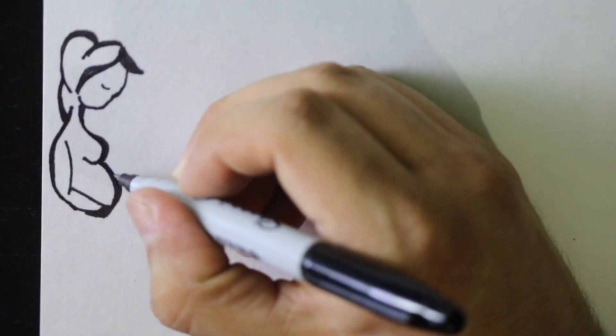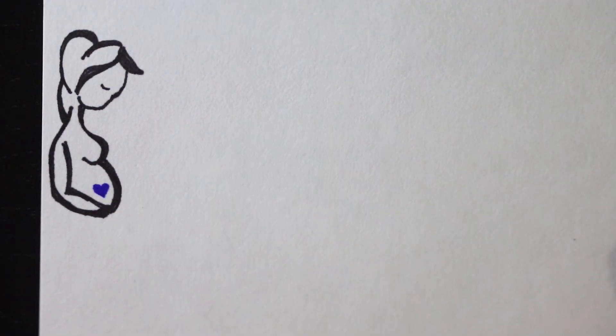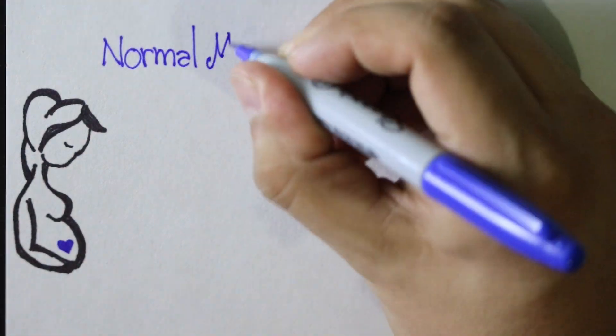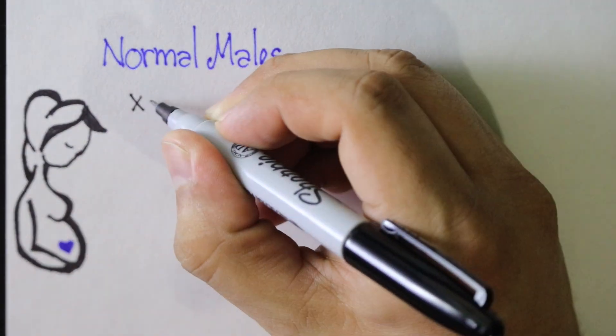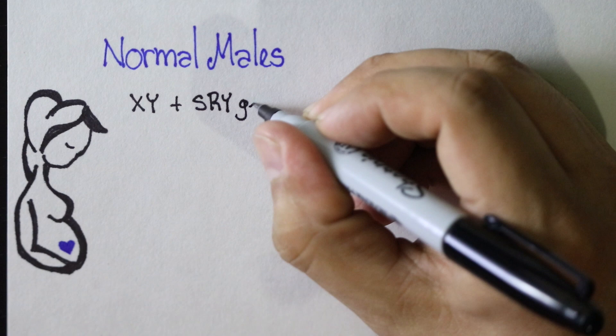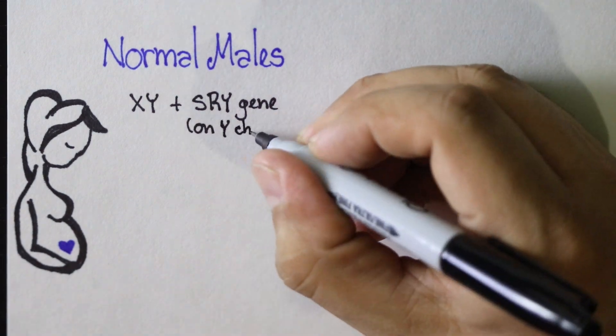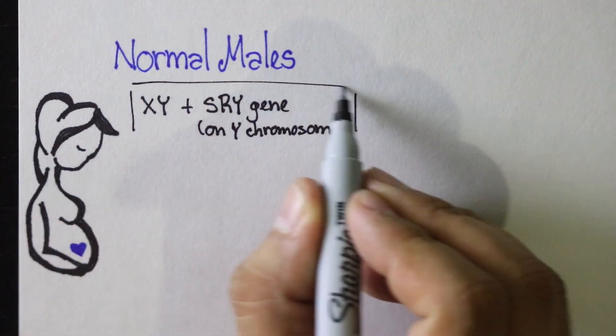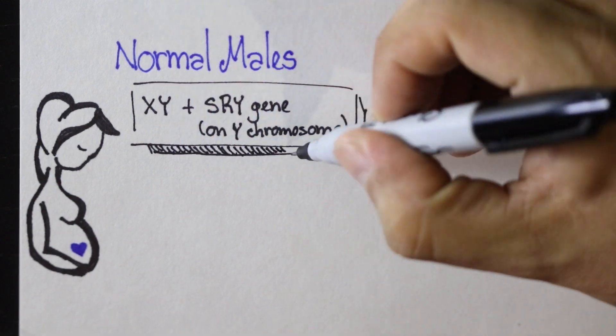Females have two X chromosomes, while males have an X and a Y chromosome pair. The Y chromosome has a special gene called the SRY gene that is activated and is responsible for the internal development of the testes.